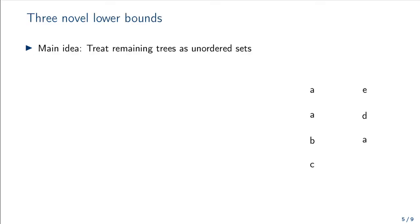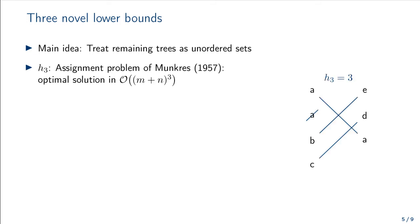The main contribution of this paper are three novel lower bounds for the unordered tree edit distance. Our key idea is to treat the remaining trees on both sides as unordered sets of nodes, like in this figure on the right. Then, we can find an optimal edit script in cubic time based on the assignment algorithm of Munkres. For this example, we would have to delete an A, relabel B with E, and relabel C with B, yielding a lower bound of 3.